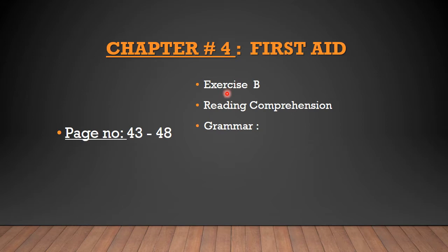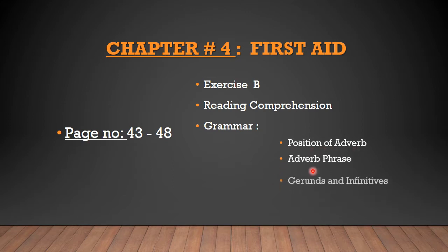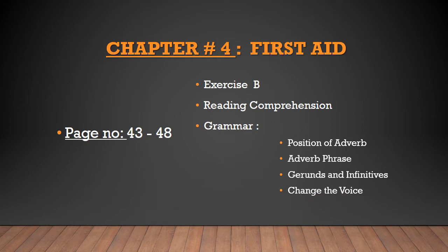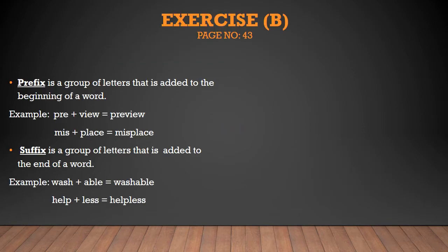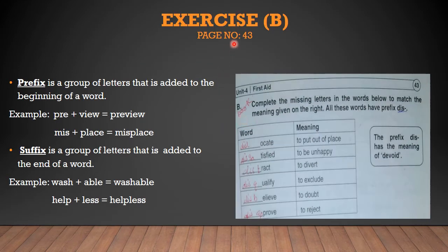Exercise B is on page number 43 — Reading Comprehension and the grammar portion. The grammar portion consists of 3 to 4 concepts: number 1 is position of adverb, number 2 is adverb phrase, number 3 is gerunds and infinitives, and number 4 is change the voice. Open your books now while listening to this lecture so you can solve the exercise with me. Open page number 43, Exercise B: complete the missing letters in the words below to match the meaning given on the right. All these words have prefix 'dis', so before doing this exercise, you all have to know about prefix.